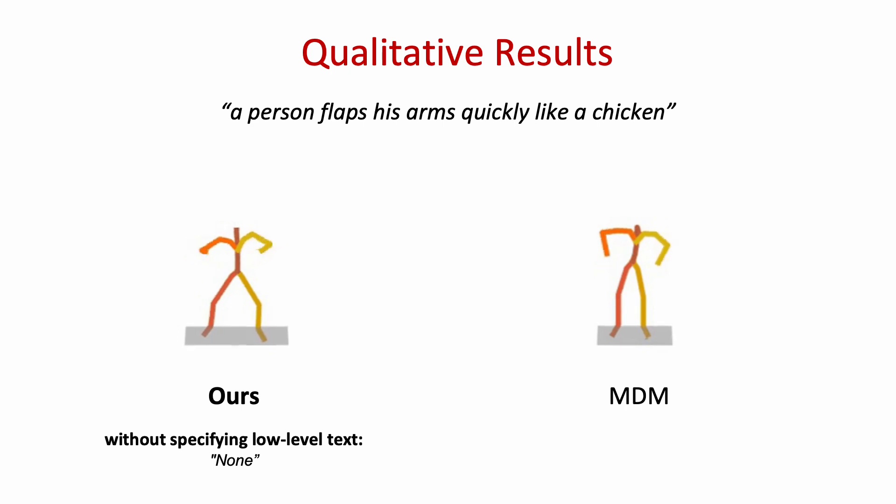We also tested our model without specifying low-level text. In this example, a person flaps his arms quickly like a chicken. We use none as a low-level text prompt. Our generated motion is still natural and aligns well with the prompt.